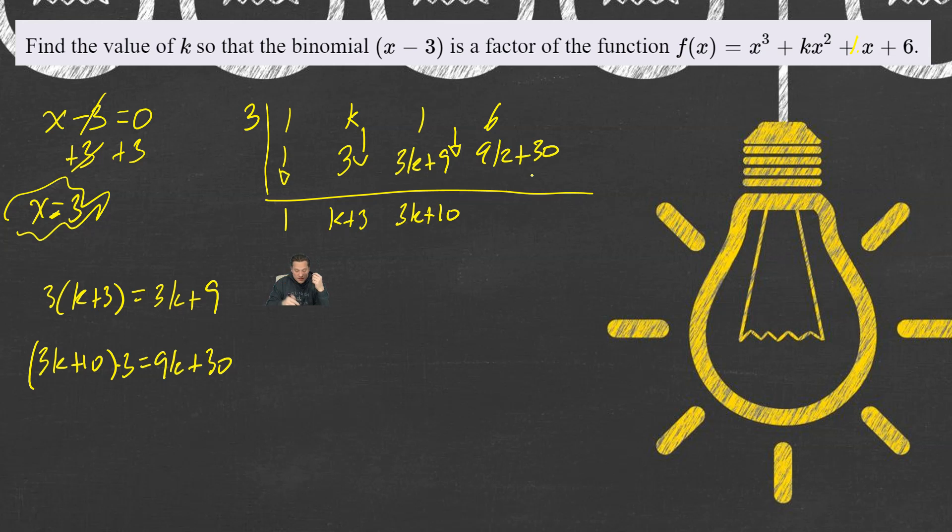And for the 3 to be a root, or the x minus 3 to be a factor, what has to be true is the following. These two things, the 6 and the 9k plus 30, added straight down, have to be equal to 0. In other words, this has to be 0. I'm not saying it is right now. It has to be 0.